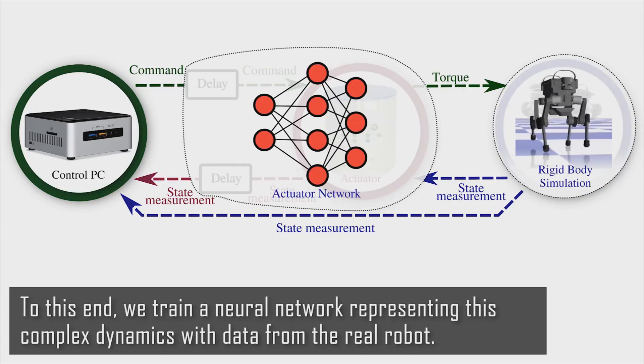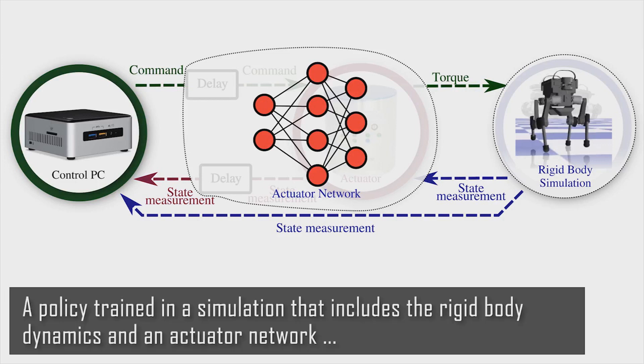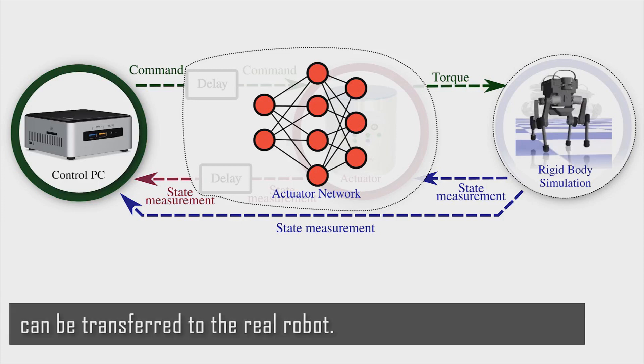To this end, we train a neural network representing this complex dynamics with data from the real robot. A policy trained in a simulation that includes the rigid body dynamics and an actuator network can be transferred to the real robot.